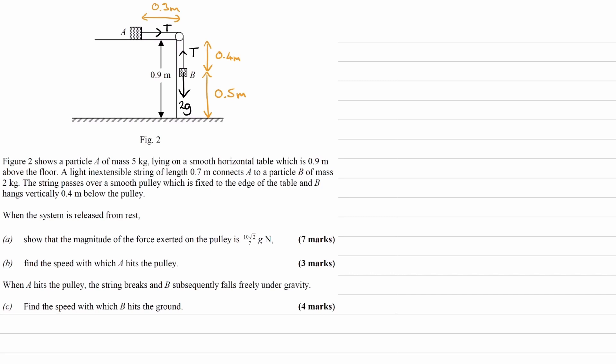The system is released from rest, and we're trying to find the force exerted on the pulley. The pulley experiences two forces: tension towards the left from the top part of the string, and tension downwards from the bottom part. Drawing the pulley, it experiences T horizontally and T vertically. Once we've worked out what T is, we can use Pythagoras to find the resultant of these two vectors. Let's start by working out T. We need equations of motion for both A and B.